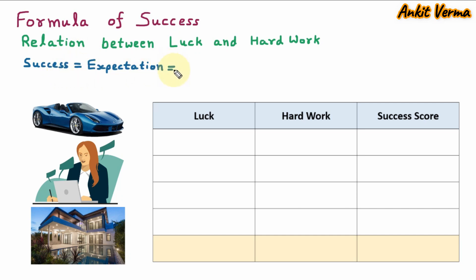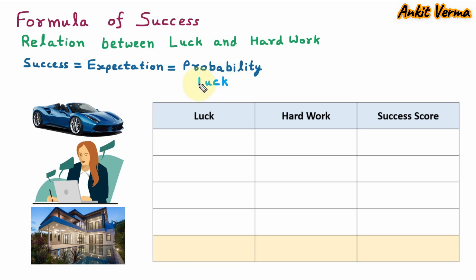This is further equal to probability. Here probability means luck. The luck can be good or bad. If we are born at a place where everybody is healthy, earning well, having all the facilities and are happy, that is good luck. Or if we are born at a place where we are having financial crisis, health is not good, and we don't have the facilities — that is bad luck.